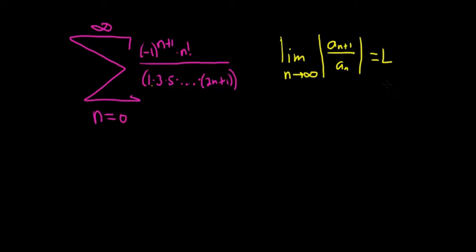It doesn't have to be a number actually, so if L is bigger than 1, it diverges—if you get infinity it diverges, if you get 2 it diverges. If L is less than 1 it converges, and the worst possible case is when L equals 1 because in this case you have no information. So let's carefully rewrite this and use the ratio test.